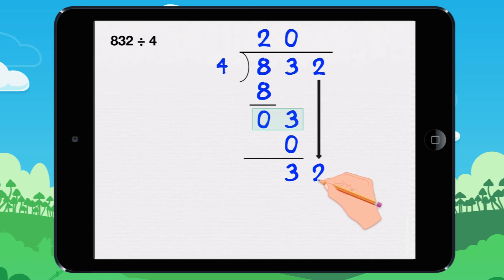Bring down the 2. How many times does 4 go into 32? It goes in 8 times, because 8 times 4 equals 32. 8 times 4 equals 32.